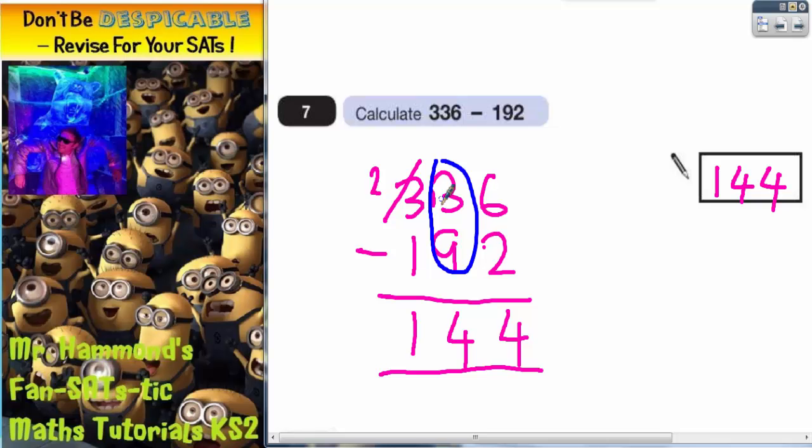And they're testing whether or not you know to put the one that you've borrowed into this column to make the 3 into 13. So just watch out for that. You've got to be able to borrow from the next column because you will need to know how to do it.